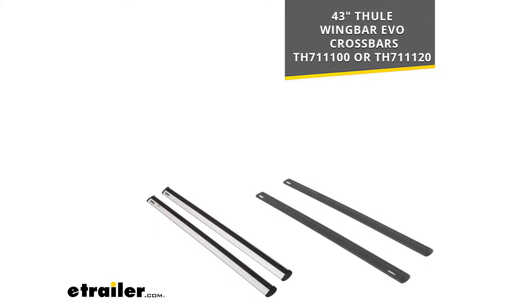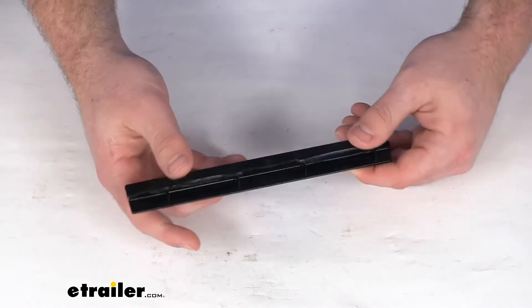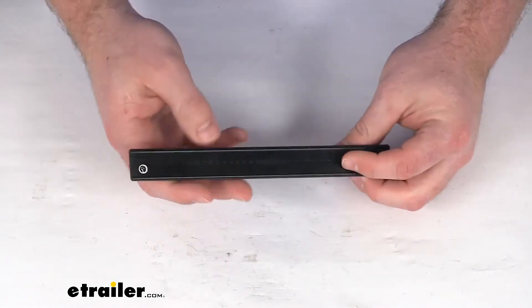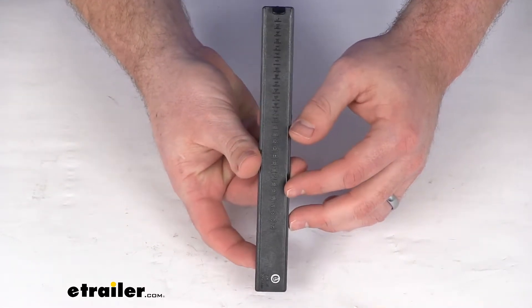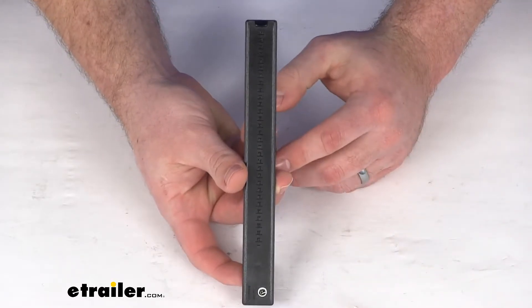Whether they have a silver or black finish, this slides right into the bottom channel to provide measurements, ensuring your crossbars are centered properly on your vehicle's roof.